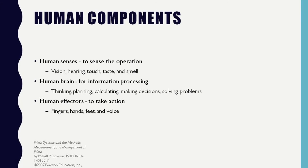These issues are the responsibility of an ergonomist when interacting with the human-machine system. Now we will go into detail about the human-machine system, starting with the human component. As suggested by the model, human components of interest are those that perform three basic functions: sensing the operation, information processing, and actions.